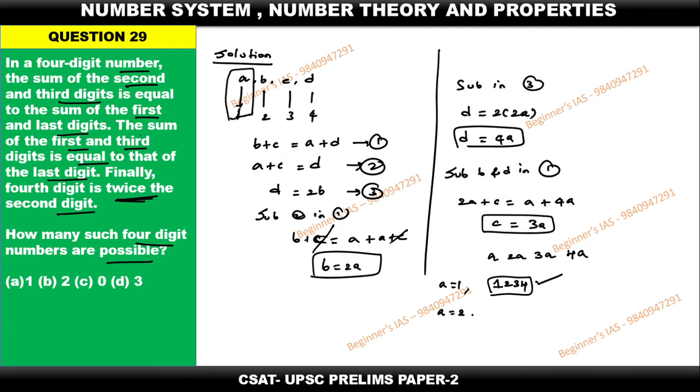Then A is equal to 2. If A is equal to 2, then 2, 4, 6, 8. Yes, this is also a 4 digit number. This is also possible. Therefore 2 possibilities are there.